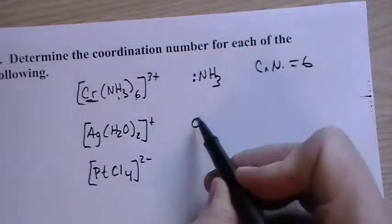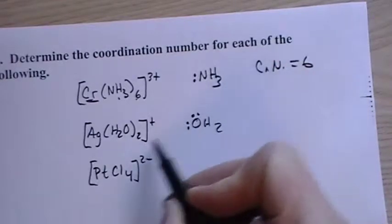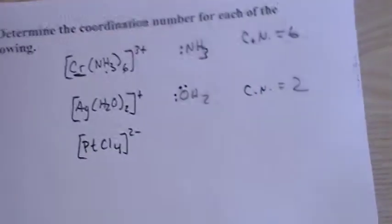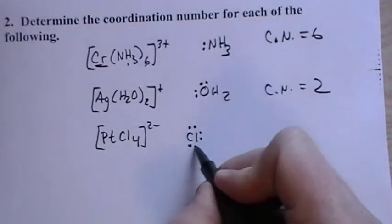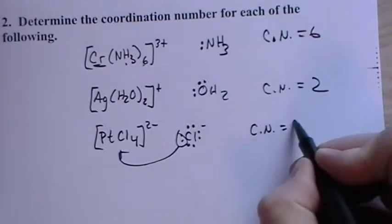Silver, water here. Water has two lone pairs, but only one can attach at a time because they're on the same atom, so there's two, so the coordination number here is two. There's four ligands here. The chlorine or the chloride has four lone pairs, but only one can bond at a time, so the coordination number is four.